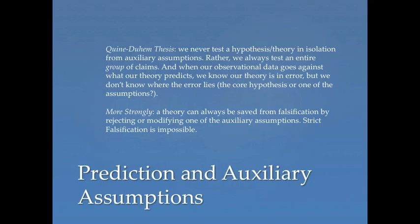So here's the stronger claim: a theory can always be saved from falsification. By rejecting or modifying one of the auxiliary assumptions, strict falsification is impossible. This means that Popper's view of strong falsification is a bit problematic. On his view, if you run into anomalous data, that means your theory has been refuted. But if the Quine-Duhem thesis is right, that's not necessarily true. You can always keep the core hypothesis. You just need to modify your auxiliary assumptions in an appropriate manner.